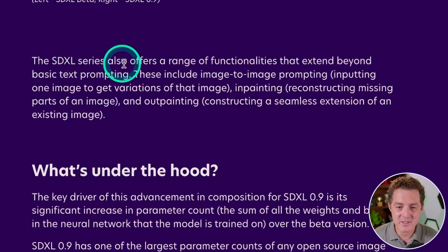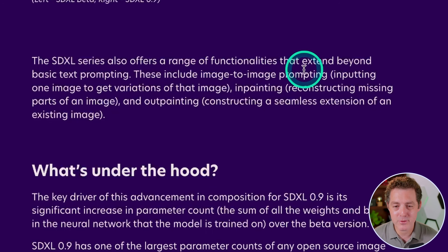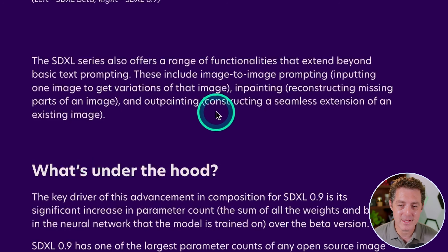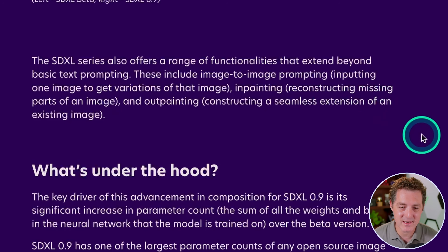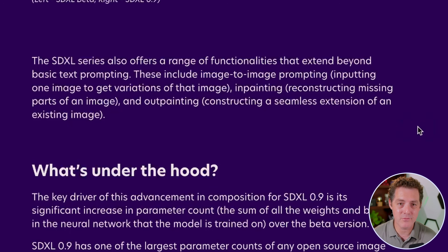The SDXL series offers a huge range of functionalities that extend beyond basic text prompting: image-to-image prompting, inpainting — which is taking portions of the image and replacing it with generative art — and outpainting, which is constructing a seamless extension of an existing image, basically taking a little piece and creating AI art extensions of what's around it.